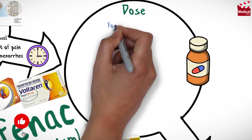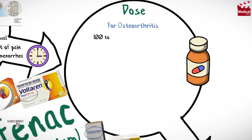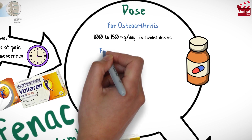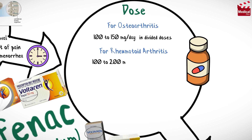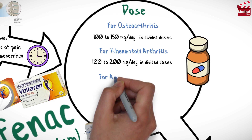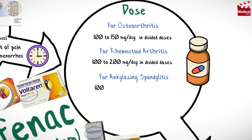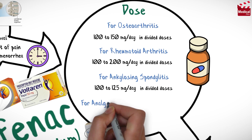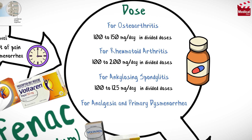The usual dose of diclofenac for osteoarthritis is 100 to 150 milligrams per day in divided doses, and for rheumatoid arthritis 100 to 200 milligrams per day in divided doses. For ankylosing spondylitis, 100 to 125 milligrams per day in divided doses.